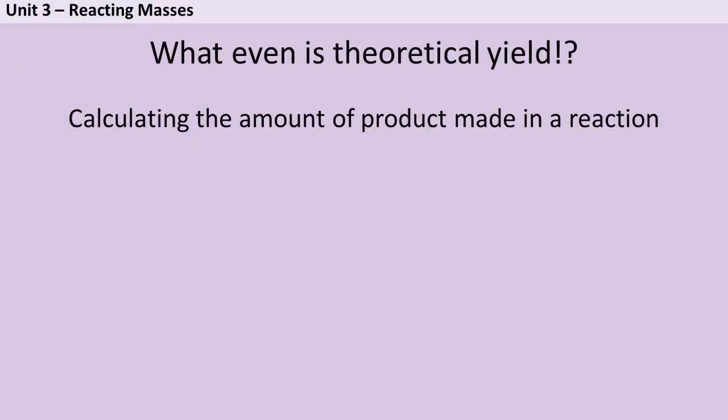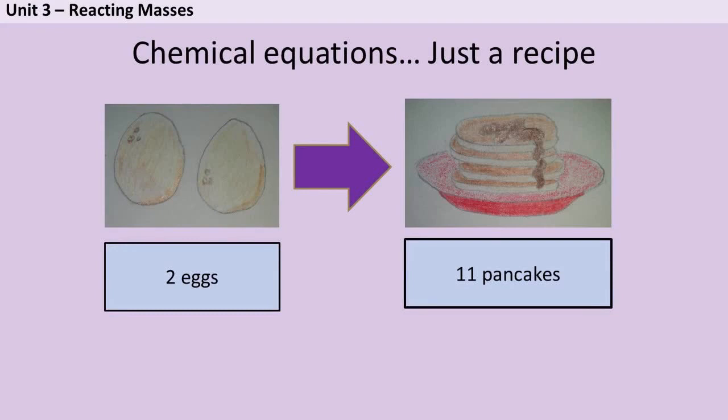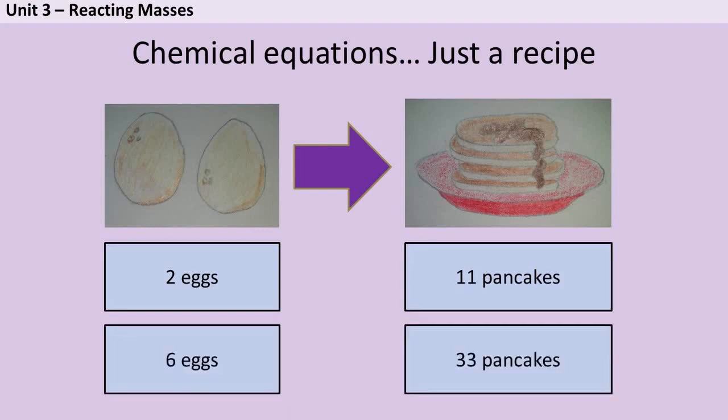Before we start let's talk about what it is we're actually working out. Imagine you have a recipe and the recipe says that if you have two eggs you can make 11 pancakes. If I told you I was going to give you six eggs then it wouldn't take you much to figure out that you could make 33 pancakes because you could just use that ratio.